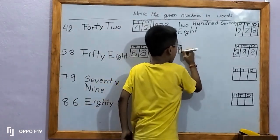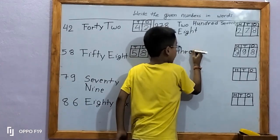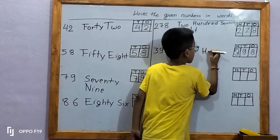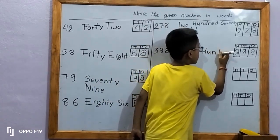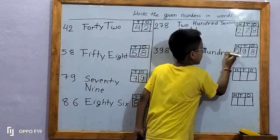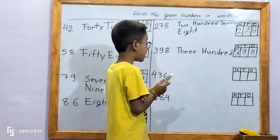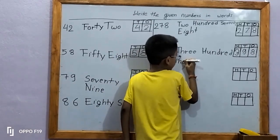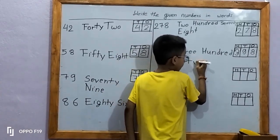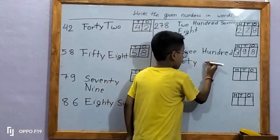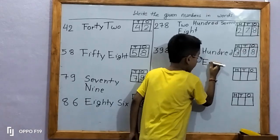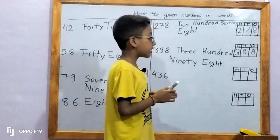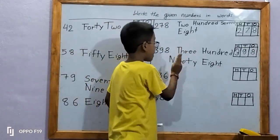T-H-R-E-E, three, H-U-N-D-R-E-D, 100. N-I-N-E-T-Y, 90. E-I-G-H-T, eight. Let's spell 398.